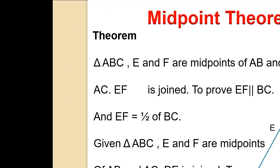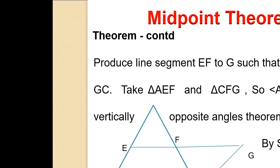Midpoint Theorem. In Triangle ABC, E and F are midpoints of AB and AC respectively. EF is joined to prove EF parallel to BC and EF equal to half of BC. Construction: Produce line segment EF to G such that EF equals FG. Join GC. In Triangle AEF and Triangle CFG: Angle AEF equals Angle CFG by vertically opposite angles, and EF equals FG. By SAS criterion, Triangle AEF is congruent to Triangle CFG.